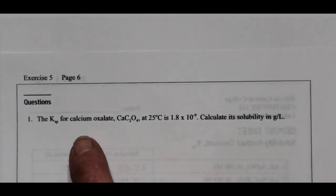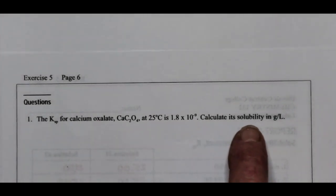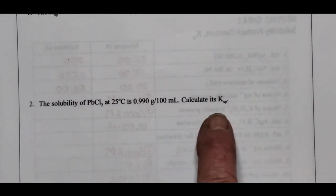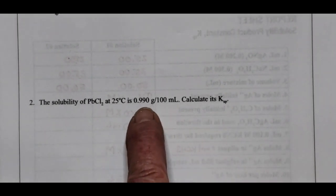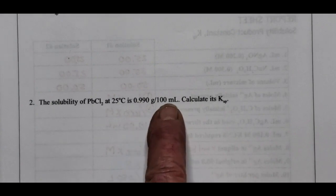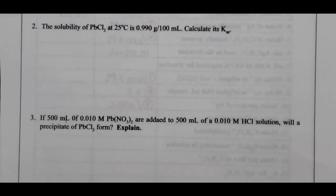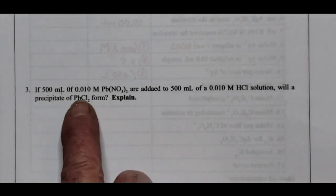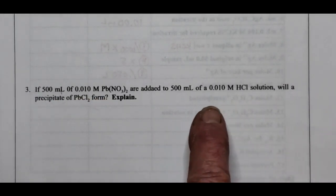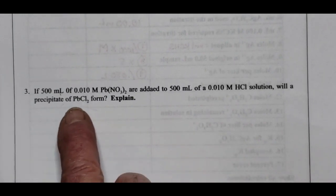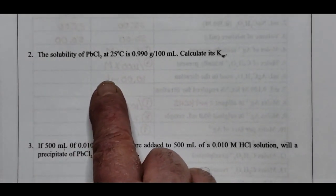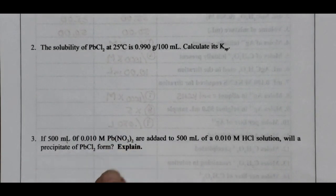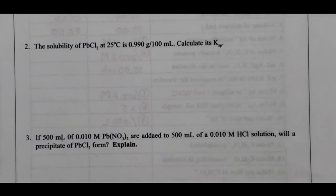On the back of the report sheet there are three questions: one gives you Ksp and asks for solubility, another gives solubility in grams per 100 mL (multiply by 10 to get grams per liter) and asks for Ksp, and a third asks you to predict precipitation by mixing a lead solution with a chloride solution — find the new molarities after mixing, compare Qsp to Ksp, and determine if precipitation will occur. Hopefully all these tips will help you get through the lab.